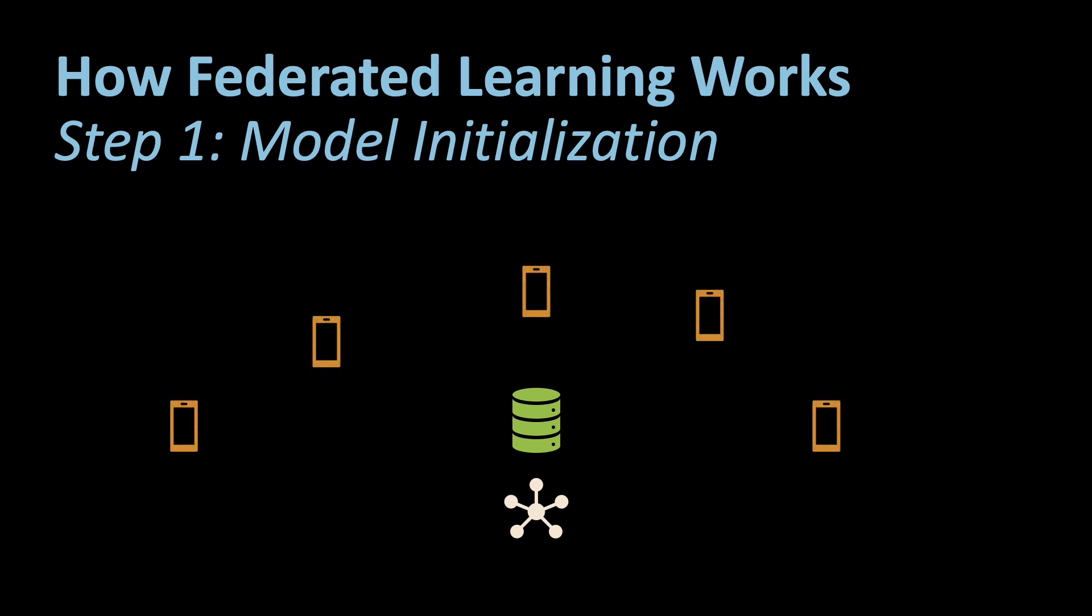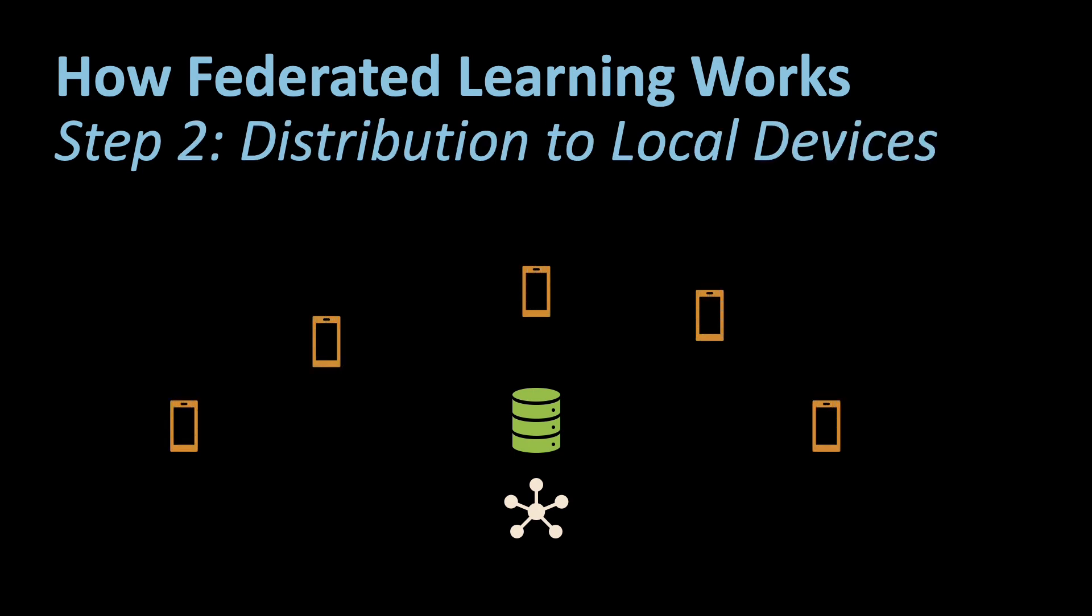Next we have the distribution to the local devices. The global model is then distributed to a fleet of local devices or edge nodes such as smartphones, IoT devices or even servers in different locations. Note that in this case I have pictured a couple of smartphones but it could be around 100-200 devices which are chosen at random.